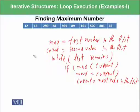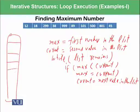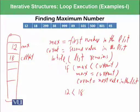Let's try to execute it. So we have a RAM over here. Max has initially 12 and current has initially 18. While list remains, yes list remains. If max is less than current, so 12 is less than 18, condition is true. So current is assigned to max. Max becomes 18.